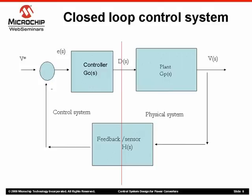This is the block diagram of the closed-loop control system. There are three major components: one is the plant, which is your physical system; another is the controller, which is what gets implemented in software or as an analog controller; and the third is the feedback or sensor portion.